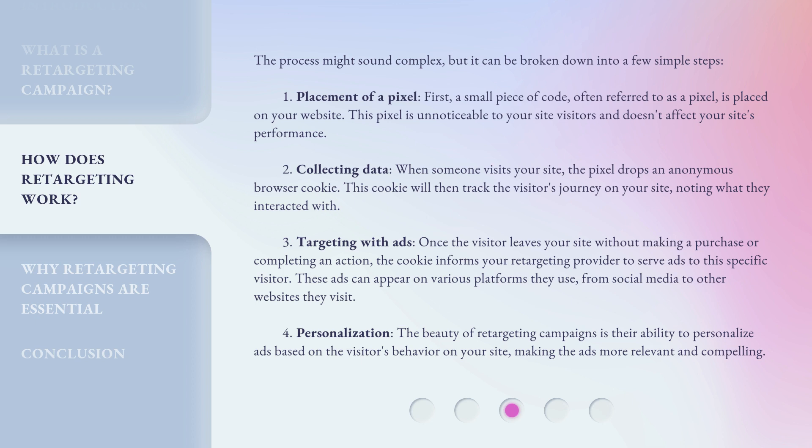Step 2: Collecting data. When someone visits your site, the pixel drops an anonymous browser cookie. This cookie will then track the visitor's journey on your site, noting what they interacted with. Step 3: Targeting with ads. Once the visitor leaves your site without making a purchase or completing an action, the cookie informs your retargeting provider to serve ads to this specific visitor. These ads can appear on various platforms they use, from social media to other websites they visit.